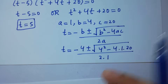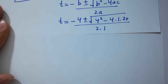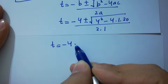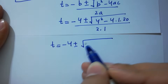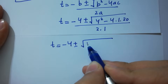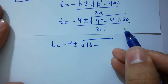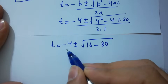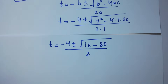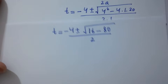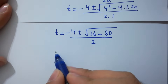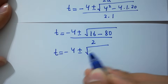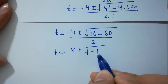Substituting values: t equals minus 4 plus or minus square root of 4 squared minus 4 times 1 times 20, over 2 times 1. That gives minus 4 plus or minus square root of 16 minus 80, over 2, which is minus 4 plus or minus square root of negative 64, over 2.